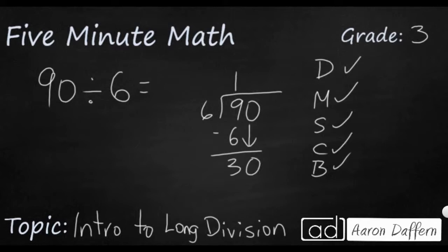That looks like that's going to work. 6 divides into 30 five times. 5 times the 6 is going to be 30. We're going to subtract. It's going to have nothing left over, which is wonderful. 0 is smaller than 6 and bring down. We're done. So 6 goes into 90 15 times.